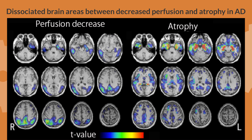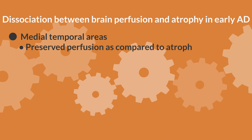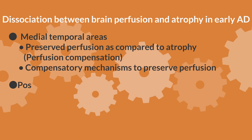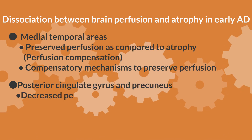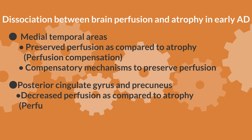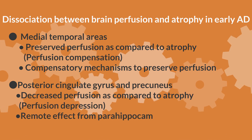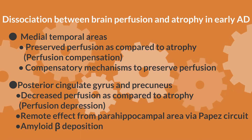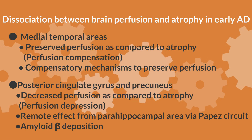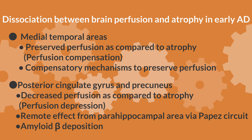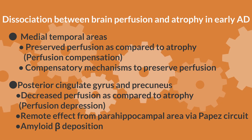In Alzheimer's disease, there is a discrepancy between the area of decreased perfusion and the area where cerebral atrophy is observed. A statistically significant decrease in perfusion is seen in the parietal lobe to the posterior cingulate gyrus and precuneus, while atrophy is more pronounced in the medial temporal lobe. In the medial temporal lobe, perfusion tends to be maintained compared to atrophy, suggesting a compensatory mechanism called perfusion compensation. In the posterior cingulate gyrus and precuneus, there is a marked decrease in perfusion compared to atrophy, referred to as perfusion depression, caused by amyloid beta-protein deposition and inhibition of perfusion due to remote effects from the parahippocampal gyrus via the Papez neural circuit.